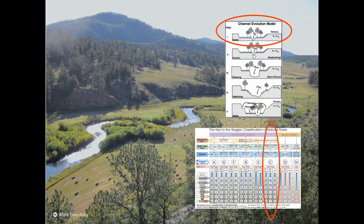The upper one is Stanley Schumm's classic channel evolution model, and our stream comes out in stage one. The lower one is the Rosgen River classification system, and our example keys out as C4. Students from the 1990s and early 2000s — my generation — were taught to use these models to design channels for river restoration. It was called natural channel design, and the purpose was to construct channels that are static, efficient, and in perfect balance.